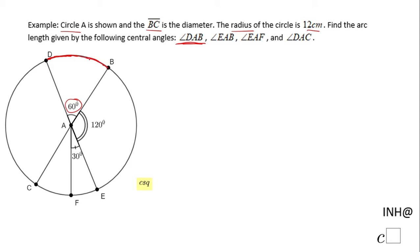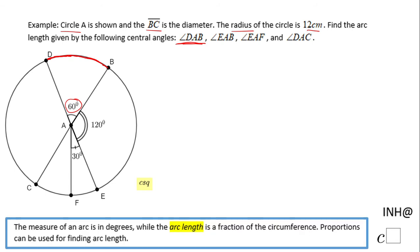The length of an arc is a fraction of the circumference. So the first thing you have to do is find the circumference, which we can use this formula for: C = 2πr, since we know the radius.